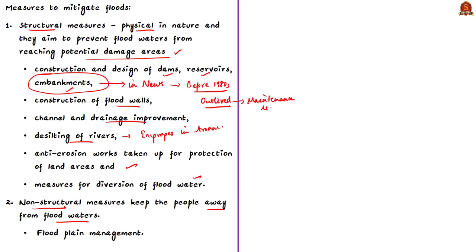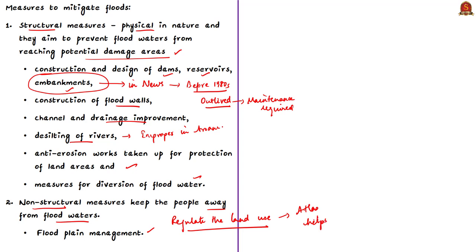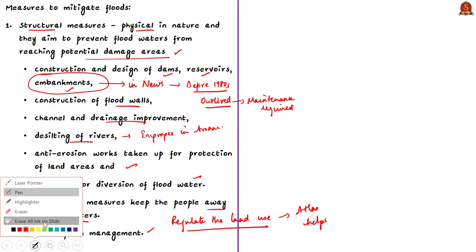Non-structural measures include floodplain management, which regulates land use in floodplains to restrict damage due to floods while deriving maximum benefit from them. The flood hazard atlas helps in carrying out floodplain management, as people will be regulated based on the level of flood hazard, keeping people away from flood waters and greatly reducing damages to human beings.